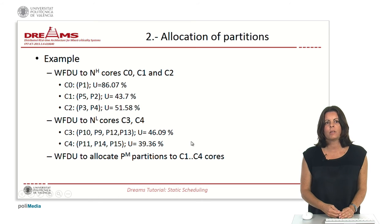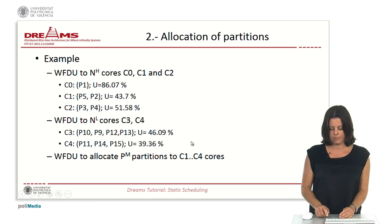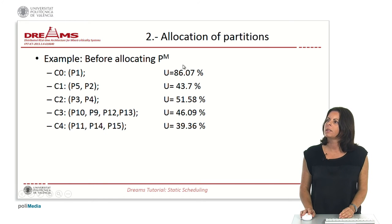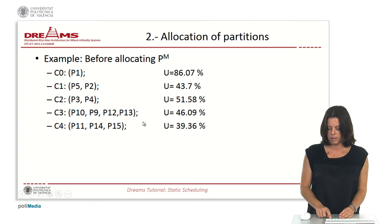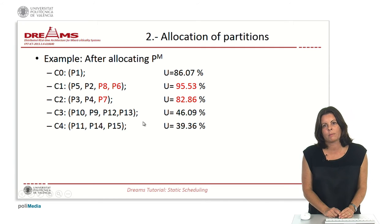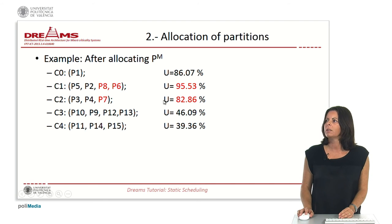The next step is to allocate the medium partitions to the cores belonging to the high criticality level. If not possible, the medium partitions must be allocated to the other cores. In this example, we have enough space to allocate the medium partitions to cores 1 and 2. This is the result with the final utilization of the five cores.